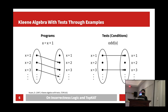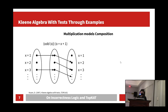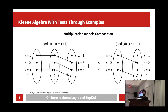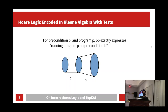A test will filter out all the memories that don't satisfy odd(x), keeping only the ones that do — for example, keeping x equals 1, x equals 3, and so on. The advantage of modeling conditions this way is that tests can be composed with programs. For instance, odd(x) composed with x equals x plus 1 first filters all memories not satisfying odd(x) and then executes x equals x plus 1 on the remaining memories. This composition exactly represents running the program x equals x plus 1 on the precondition odd(x) in Hoare logic or incorrectness logic. So running program P on precondition B simplifies to composing B and P in the context of Kleene algebra with tests.